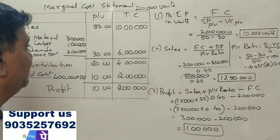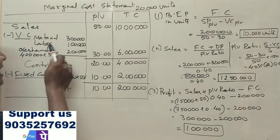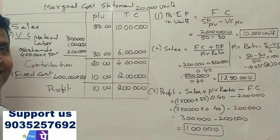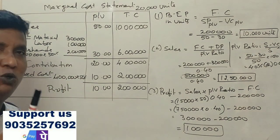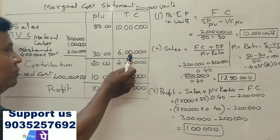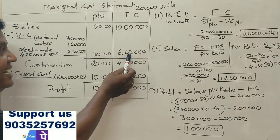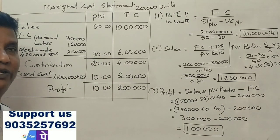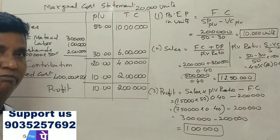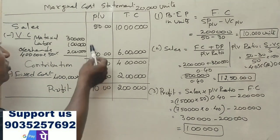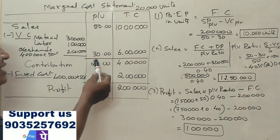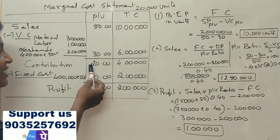Materials are 3 lakhs, labor is 1 lakh, overheads are 4 lakhs, but 50% variable is 2 lakhs. Total variable cost is 6 lakh rupees. Now, we have 6 lakh rupees per unit: 6 lakhs divided by 20,000 units, one unit variable cost per unit is 30 rupees. Now, sales minus variable cost, we have contribution. So sales minus variable cost equals contribution is 20 rupees.